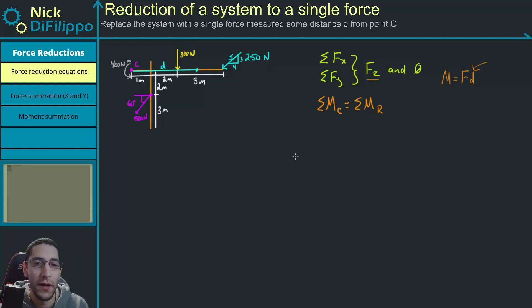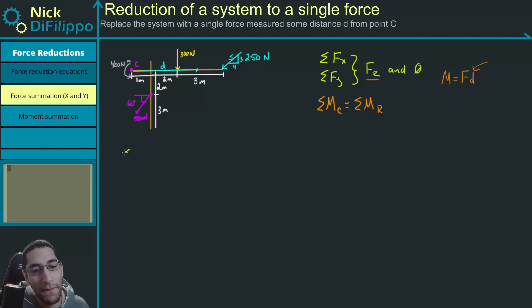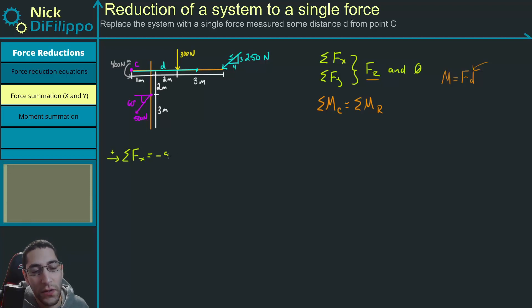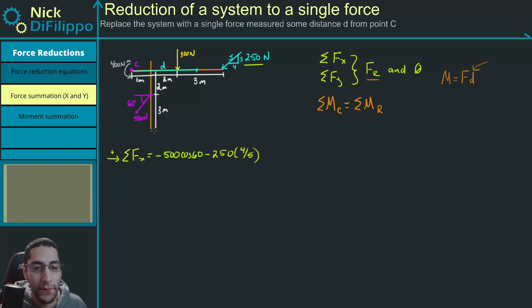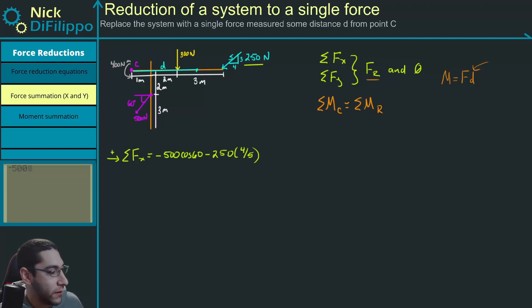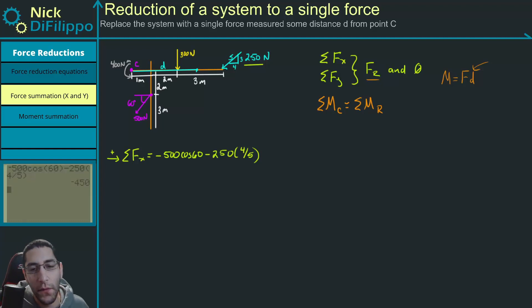Let's sum our forces in the x direction, saying to the right is positive. So we have minus 500 times the cosine of 60, minus 250 times 4 over 5. Putting that in the calculator: minus 500 cosine of 60 minus 250 times 4 over 5, we get this is equal to minus 450.